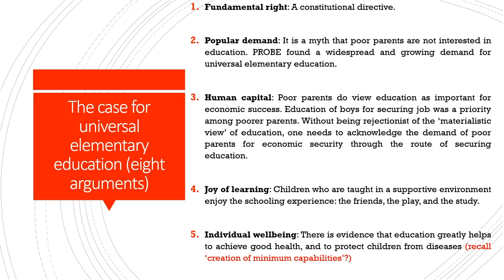The fourth argument was the simple joy of learning among children. Children taught in a supportive environment enjoy the schooling experience — the friends, the play, and the study. The very act of socialization is an important driver of schooling success. The simple joy of learning itself empowers people with various capacities, making a strong case for universalizing elementary education. The fifth argument is that of individual well-being: education is not just demanded for human capital, but also because it contributes to individual well-being, including good health and protection from disease.